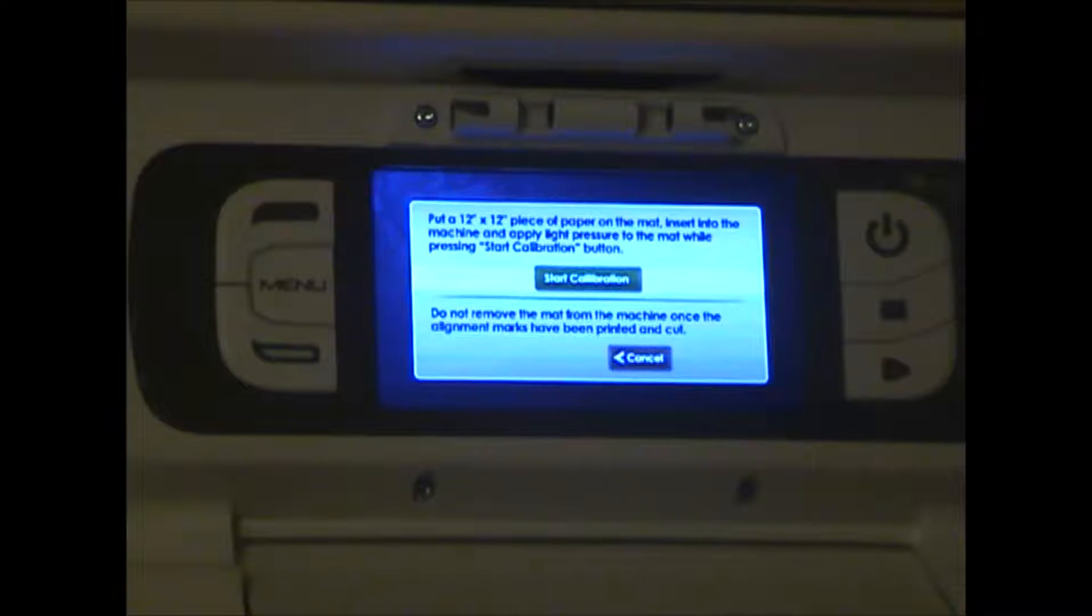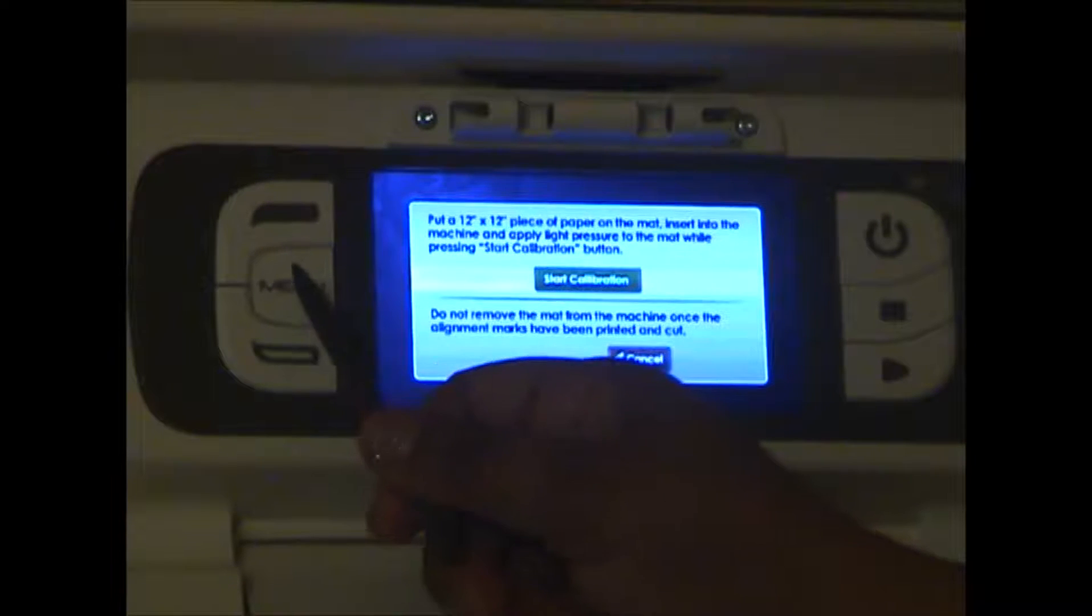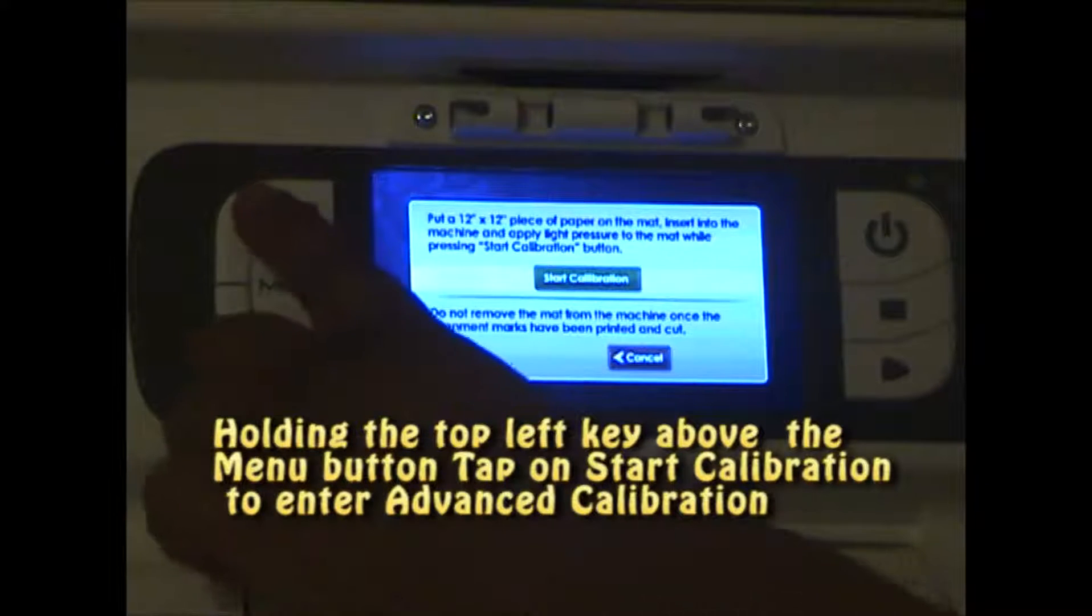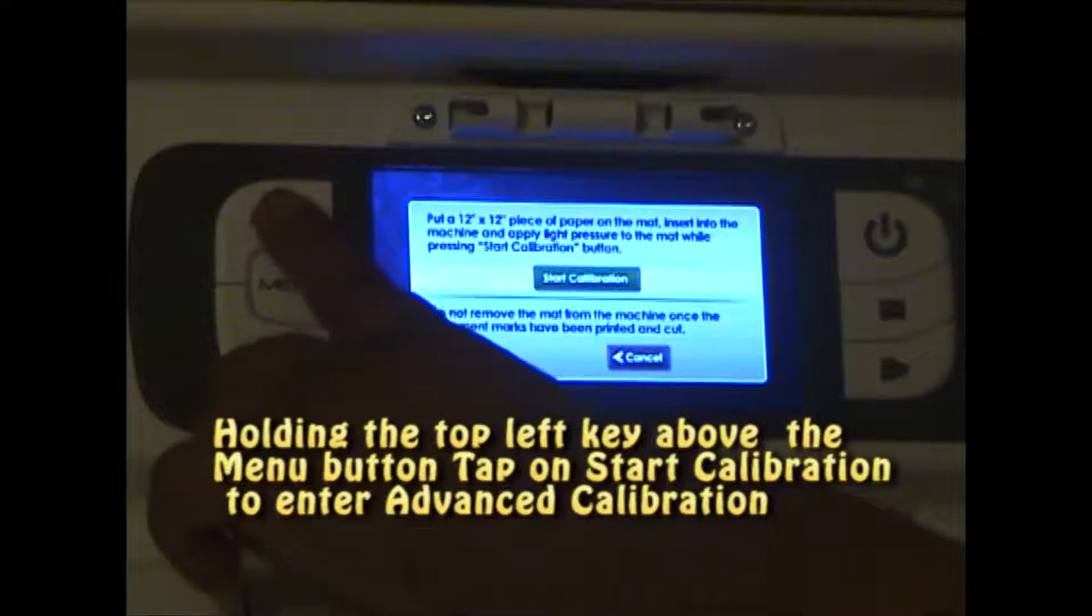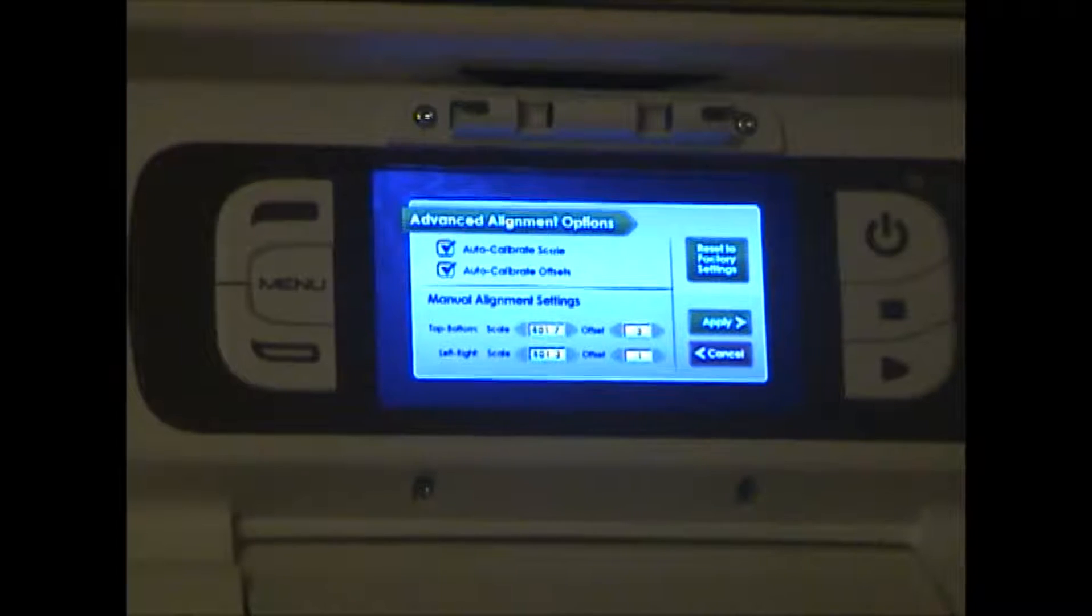To go to the advanced calibration screen, remember if you use Gypsy, you'll think of this as the zoom key. I told you this doesn't have any function yet, but I think it's going to come. With the stop key, which is above the menu key, hold on to it, don't let it go, and then start calibration. It will bring you to this advanced menu.